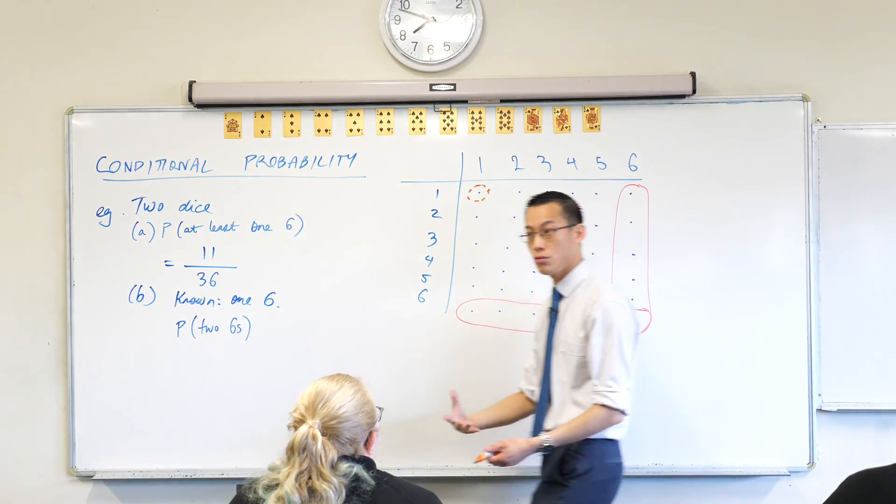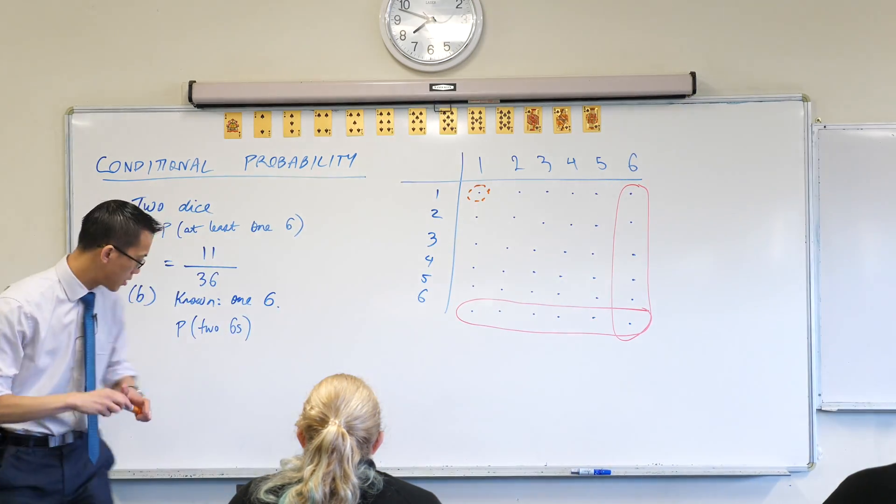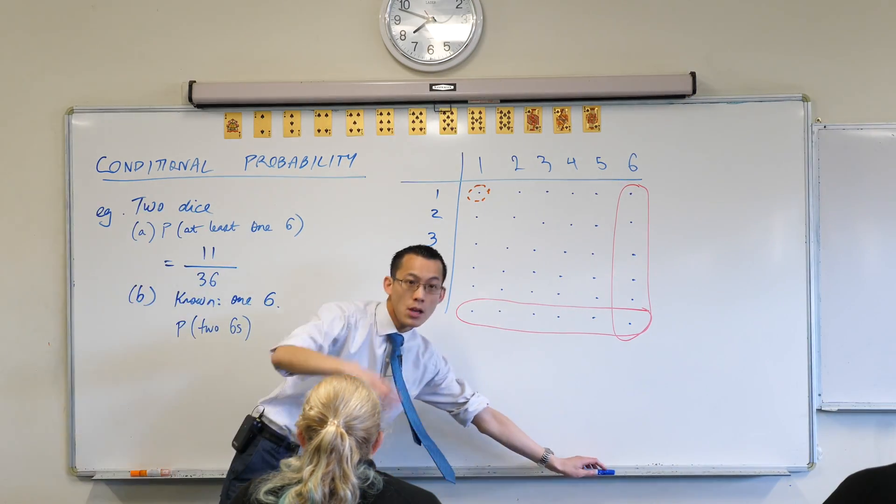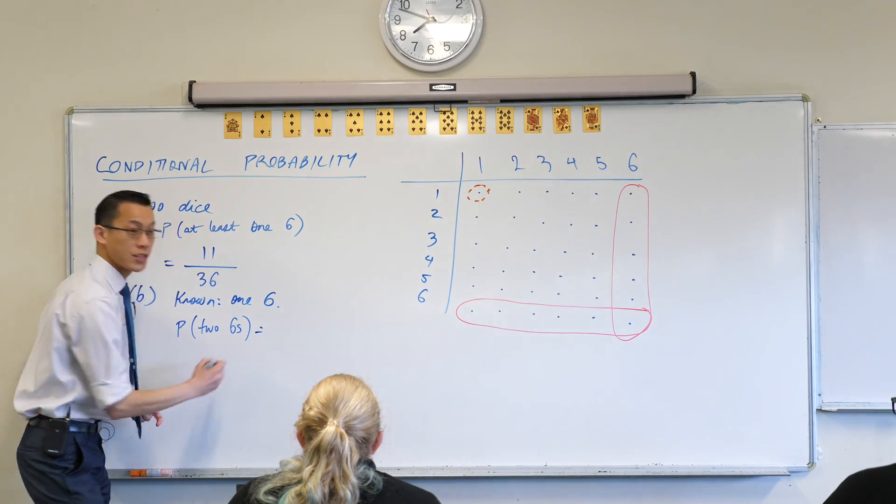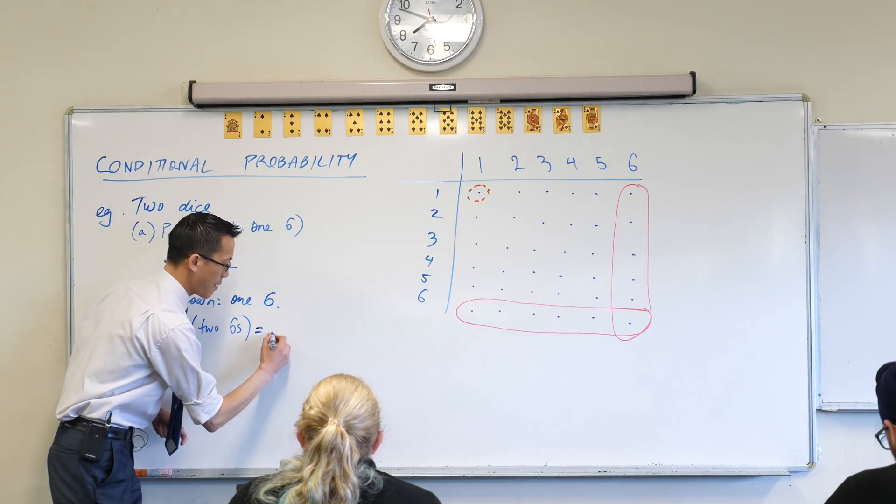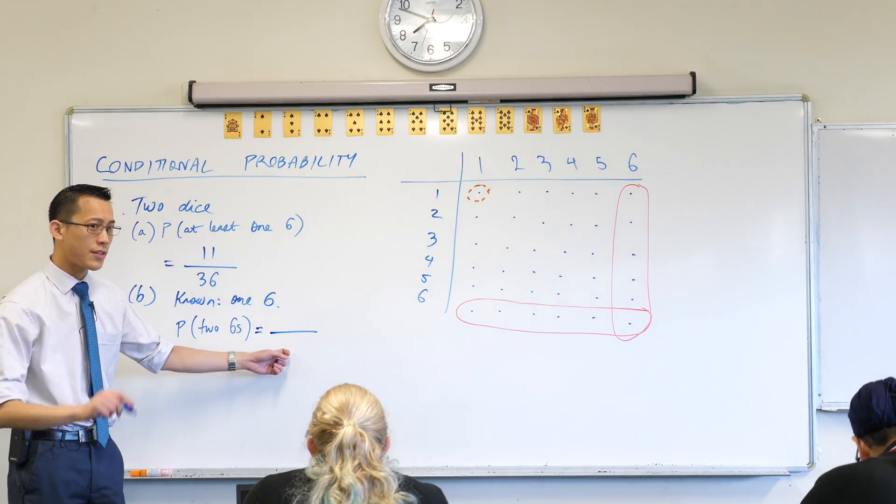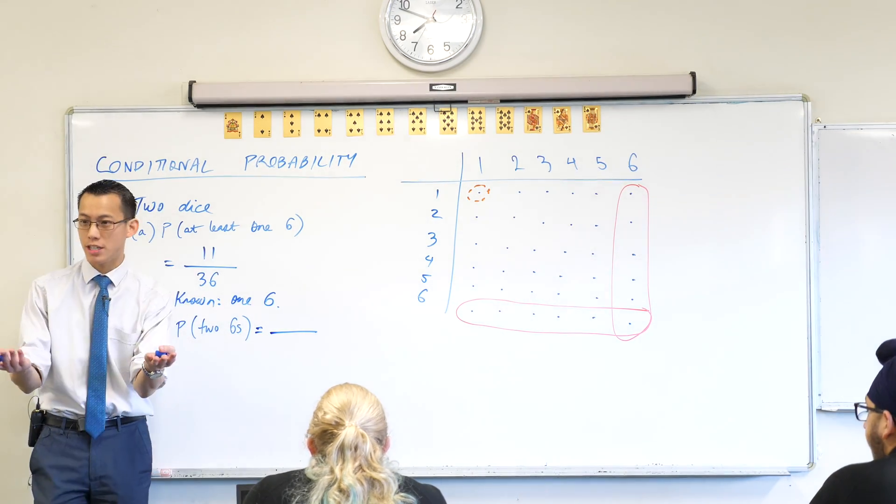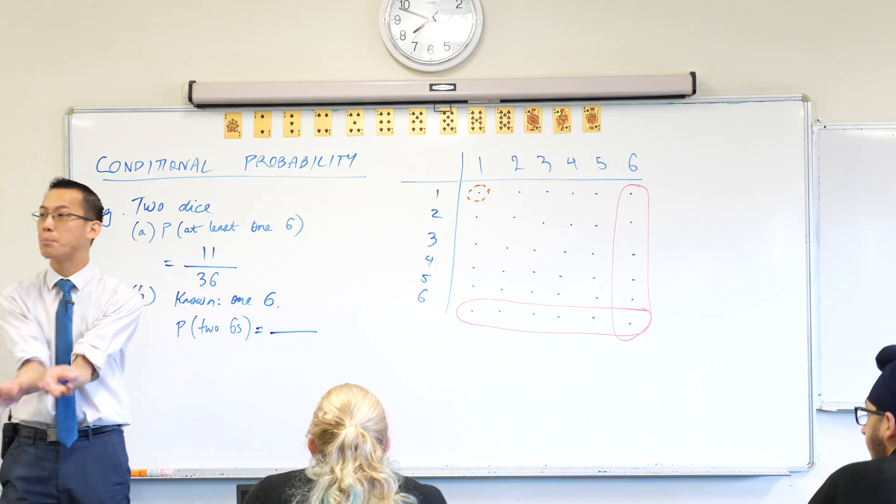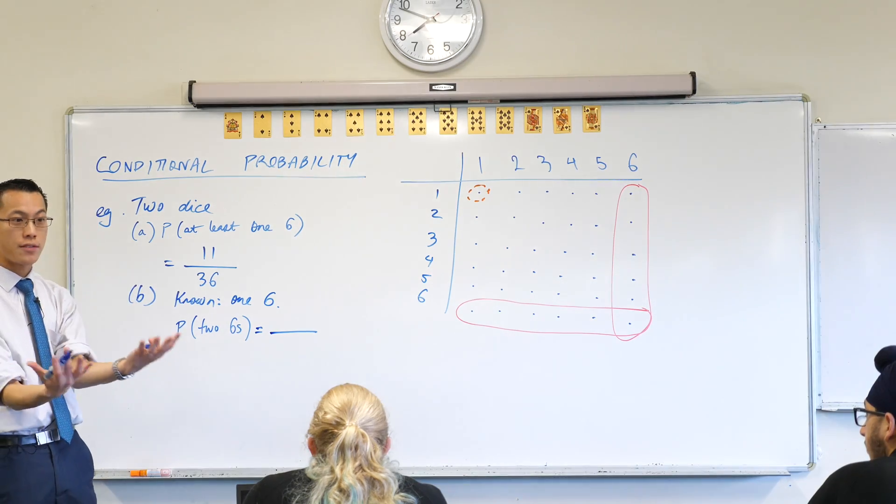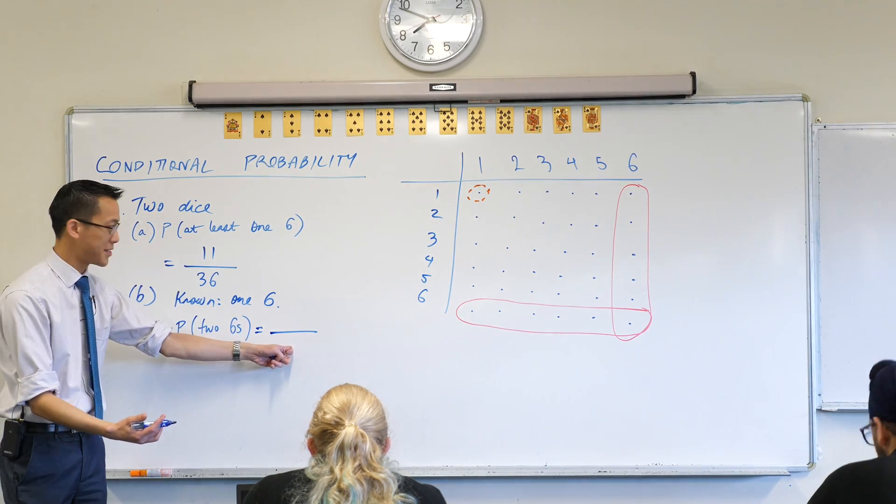These things are my new sample space. So when I construct my fraction, just like I normally do, when I'm constructing the sample space down here, it's no longer out of 36. It's not even out of six, because I'm not considering a single die on its own. I'm considering both of them together. The conditions affect both, so this sample space is...